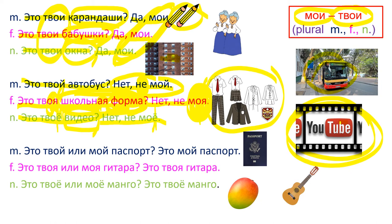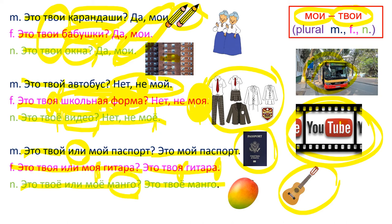Some more questions: Это твой или мой паспорт? Do you remember или? It means 'or.' Это мой паспорт. Это твоя или моя гитара? Это твоя гитара. Гитара is feminine — all the words in the sentence are feminine. Это твоё или моё манга? Это твоё манга. Манга is the boss here — that's why all the endings are for neuter gender.